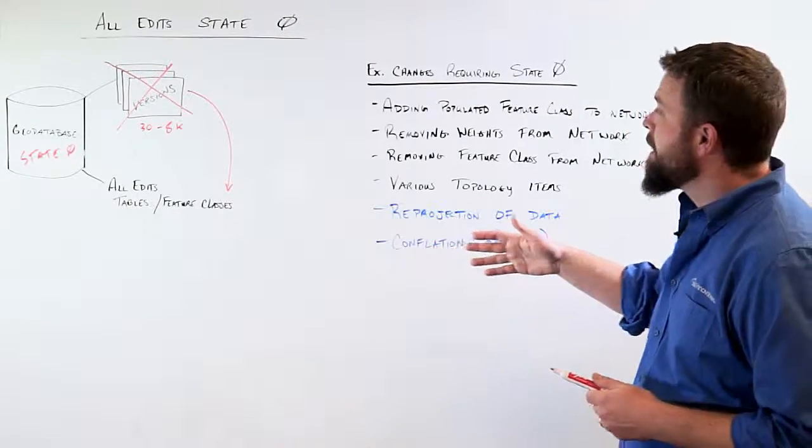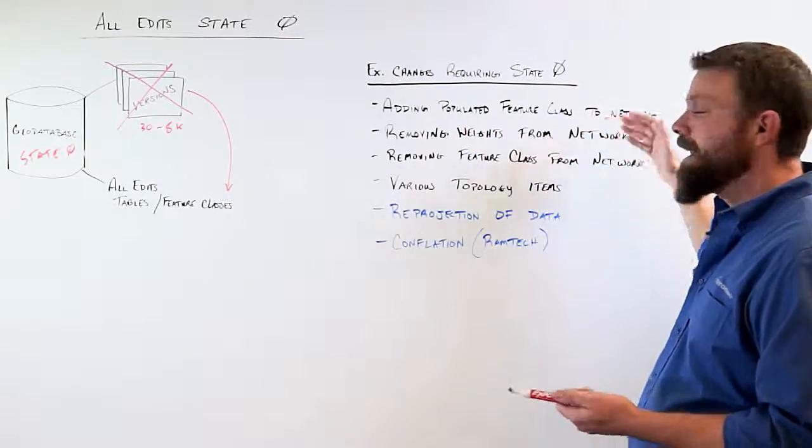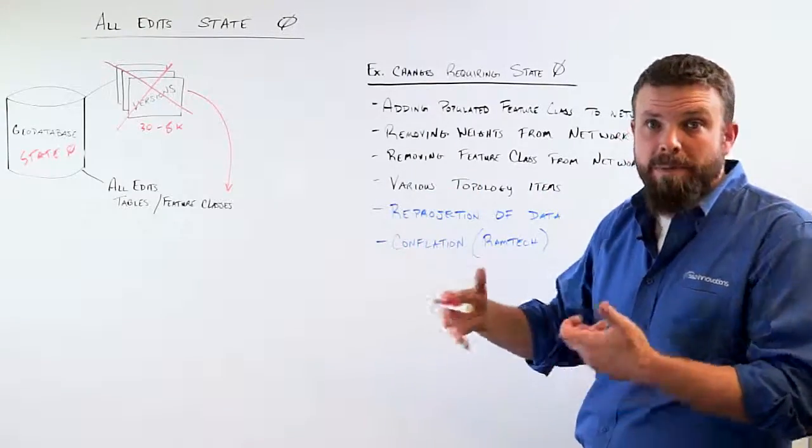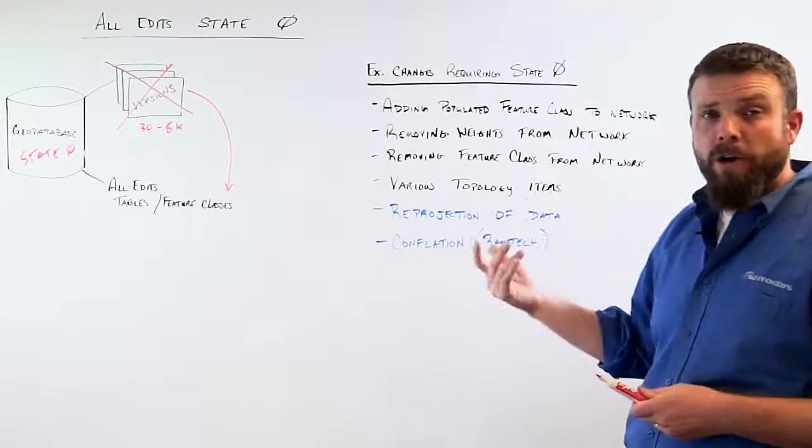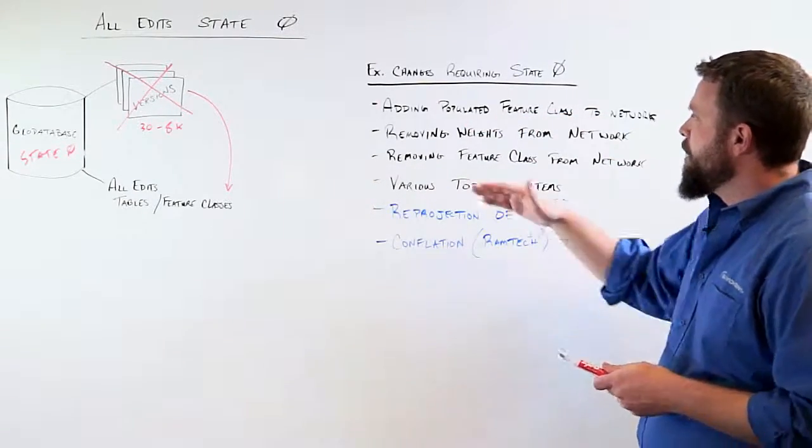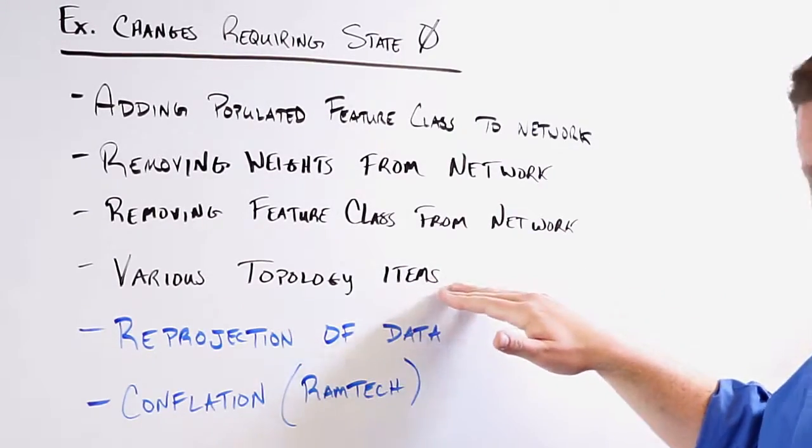A lot of it relating to networks in our case. So adding a new populated feature class, a feature class that has data into it to your network. Maybe you're adding new alternative energy points, right? Maybe solar points that have data already in them. To do that we need to get to state zero to add that to the network. Removing weights from the network. Removing feature classes from the network. Various topology items.